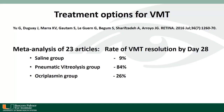A report in Retina 2016 reviewed treatment options for vitreomacular traction in a meta-analysis of 23 articles, looking at rates of vitreomacular resolution by day 28. The saline injection group was 9%, the pneumatic vitreolysis group was 84%, and the ocriplasmin group was 26%.